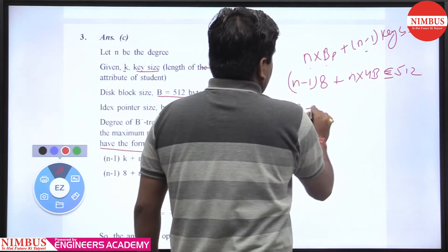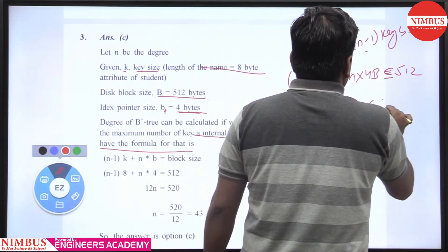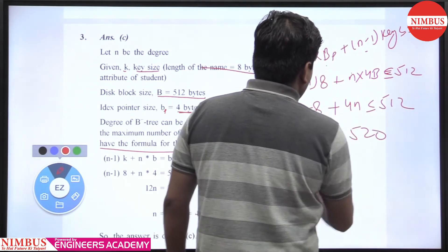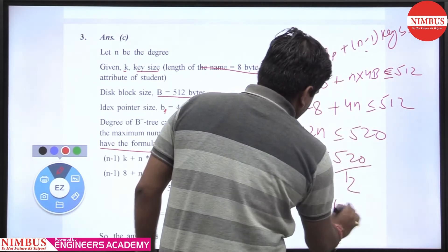This gives us 8n minus 8 plus 4n less than or equal to 512 bytes, which equals 43.